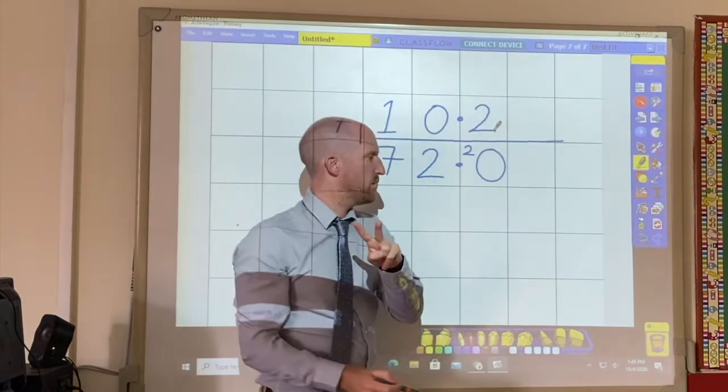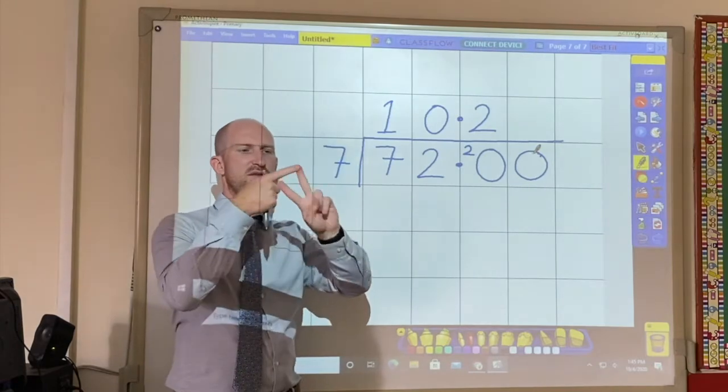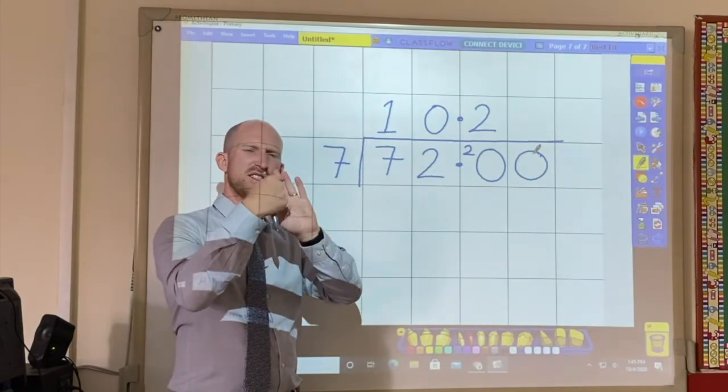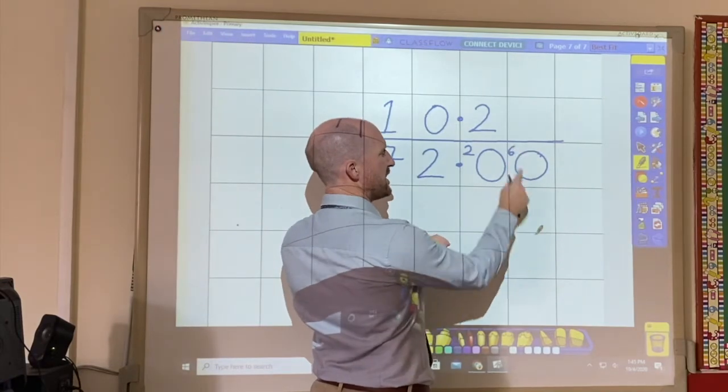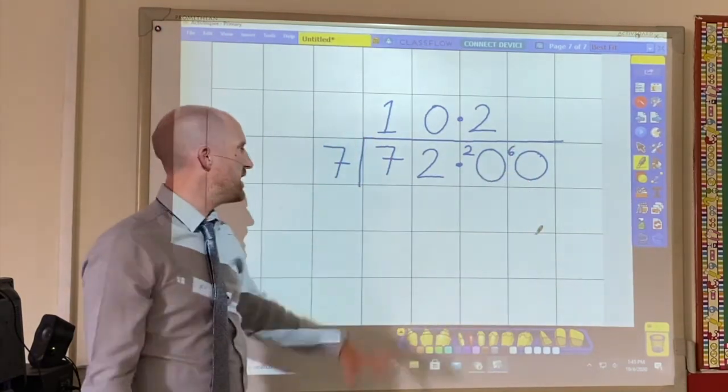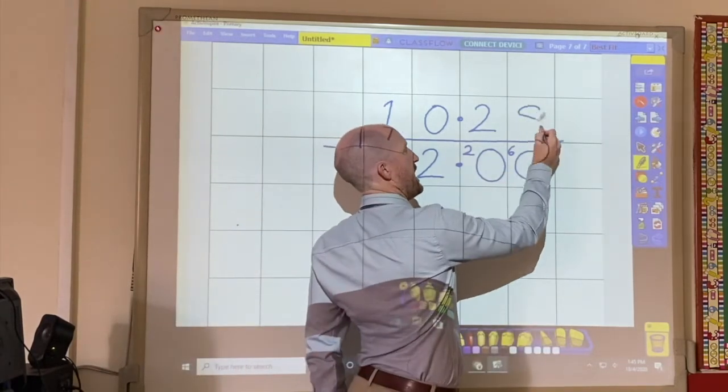Now this is what you need to do. You need to put another 0 down. So how many 7's are in 20? 7, 14. And there are 6 remainder. So that 6 goes next to another 0. And then you say how many 7's in 60? Well there are 8.